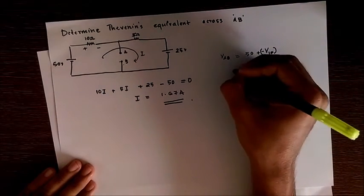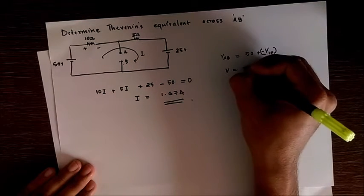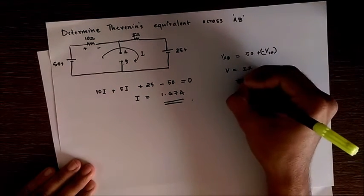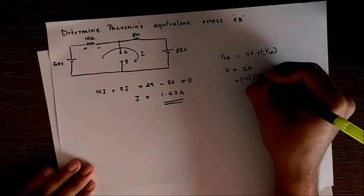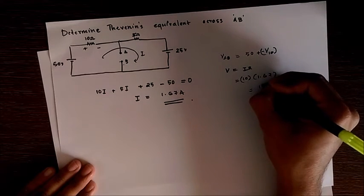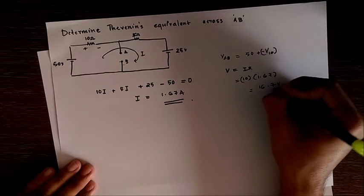Now V of 10 ohm is V equals IR, Ohm's law, 10 times 1.67 which gives 16.7 volts.